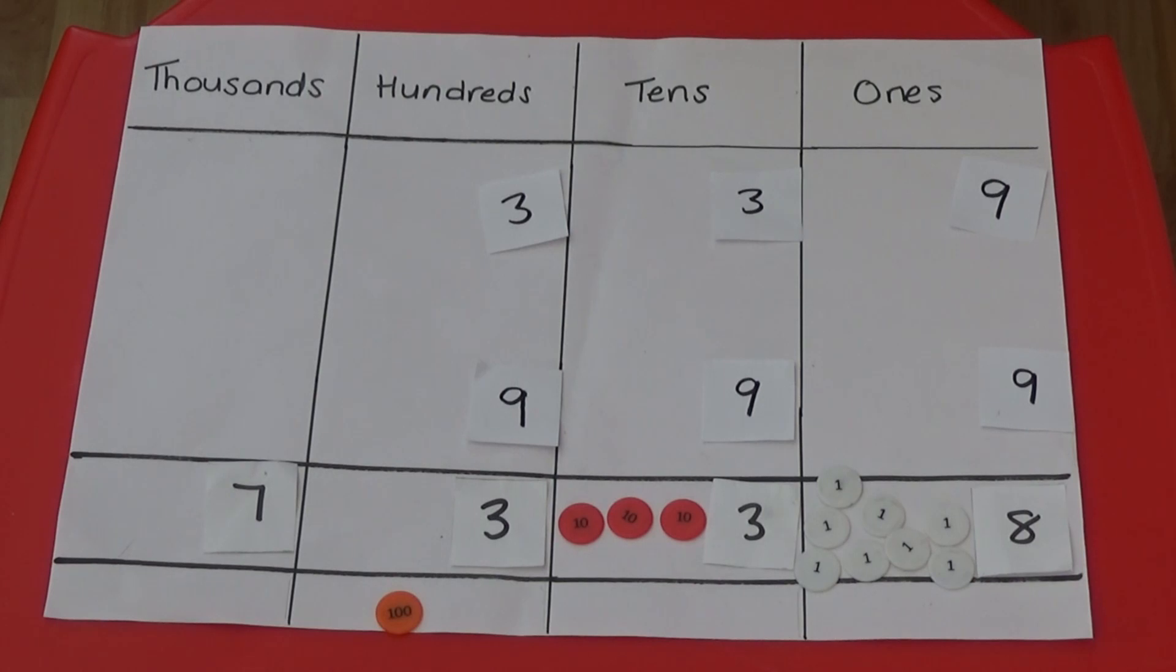I'm going to put 3 100s counters in the 100s column and exchange 10 of my 100s for a 1000 counter and put it under the answer box in the 1000s column.